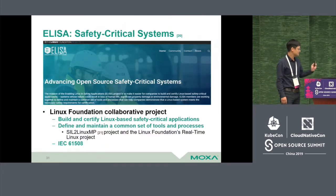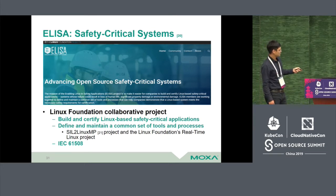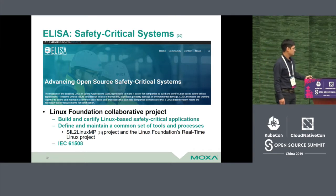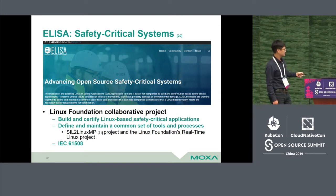For the userspace, I want to address ELISA — it's a safety-critical system project and a Linux Foundation collaborative project. This project aims to provide solutions for functional safety applications. It uses Xen hypervisor with Linux MP and the real-time kernel inside to fulfill the IEC 61508 standard. So if you are focused on functional safety, you can look into this project along with Xen Linux MP and the real-time kernel.